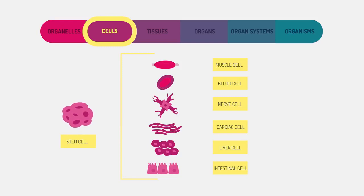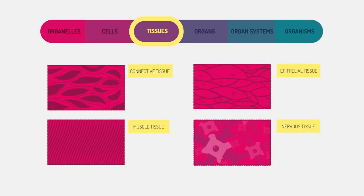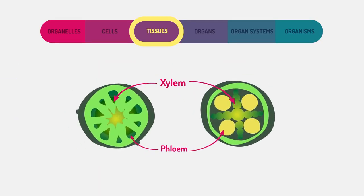Groups of cells then form together to form tissues. In humans, we have four main types of tissue. In plants, the xylem and phloem are examples of plant tissues.